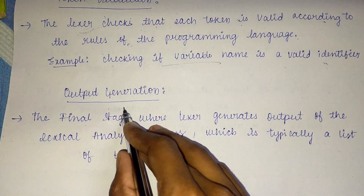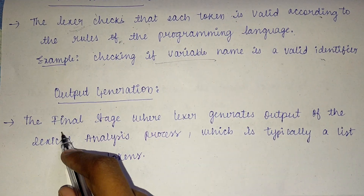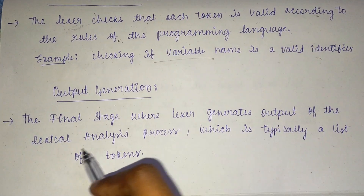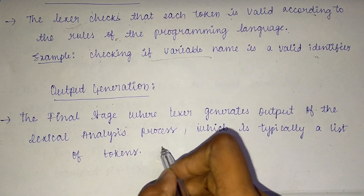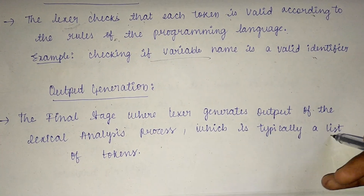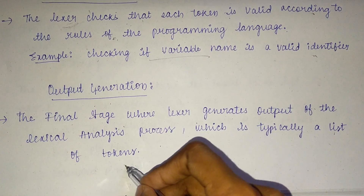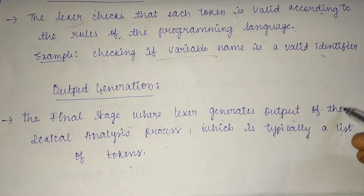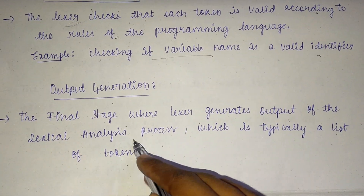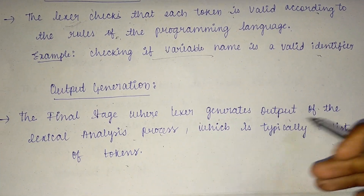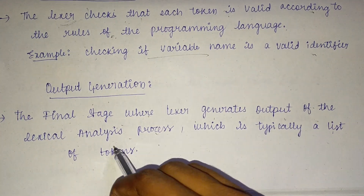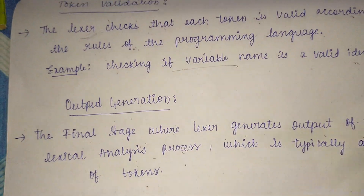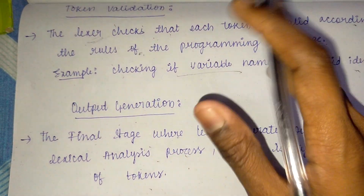The final step is output generation. This is the stage where the lexer generates the output of the lexical analysis process, which is typically a list of tokens.